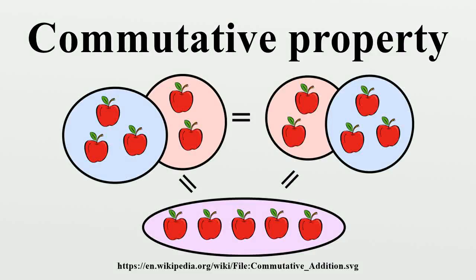In mathematics, a binary operation is commutative if changing the order of the operands does not change the result. It is a fundamental property of many binary operations, and many mathematical proofs depend on it. Most familiar is the property that says 3 plus 4 equals 4 plus 3, or 2 times 5 equals 5 times 2.